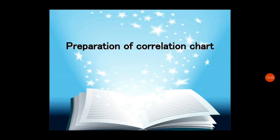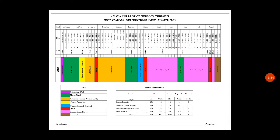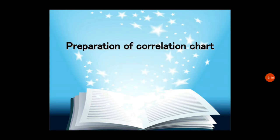The fourth element is preparation of the correlation chart, which is a pictorial portrayal of the extent of correlation achieved in the total curriculum in relation to different courses of study, various subjects, and clinical experiences offered in the program. It is a pictorial representation of the master plan — what has been written in the master plan is converted into a visual picture representation.